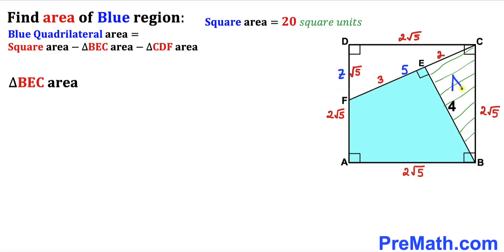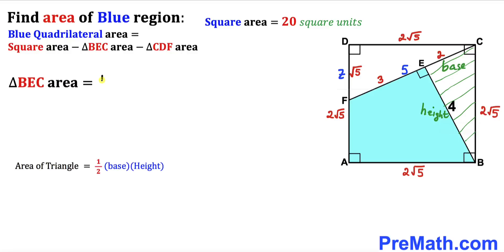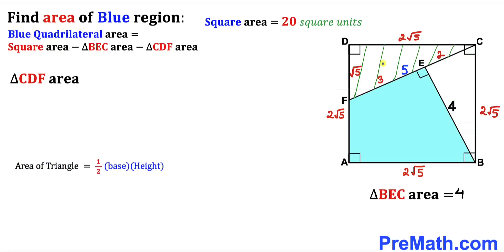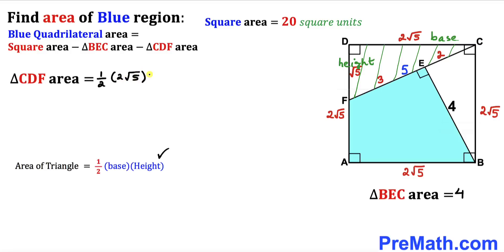Let's calculate the area of triangle BEC using the formula: area equals one-half times base times height. Base is 2 and height is 4, so the area of triangle BEC equals one-half times 2 times 4, which gives 4. For triangle CDF, base is 2√5 and height is √5: one-half times 2√5 times √5 equals 5.